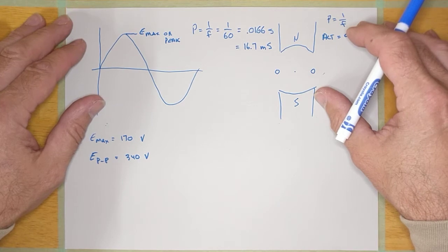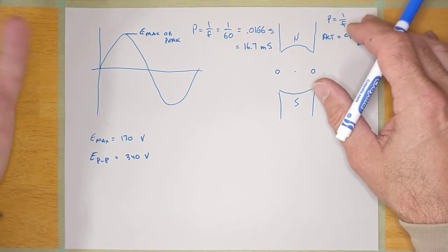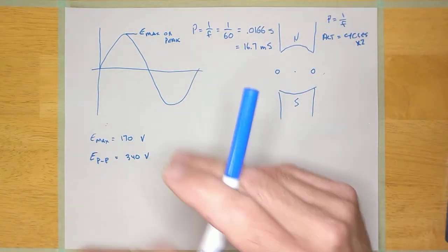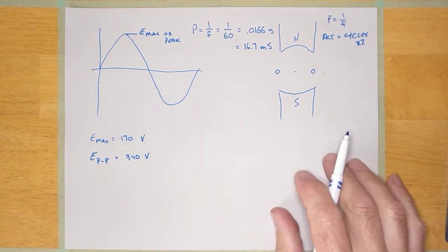Now, if you recall from level 2, the AC voltage is not the peak voltage, and nor is it the peak-to-peak voltage. It's just another voltage altogether. It is the voltage that's known as the effective or RMS voltage.